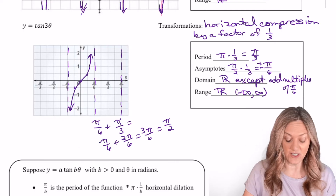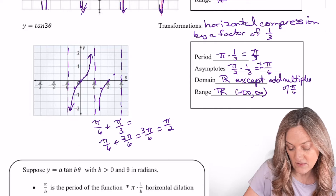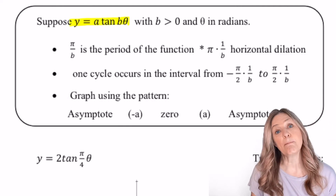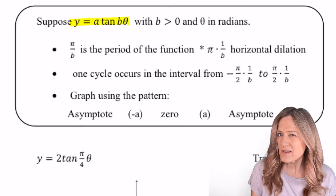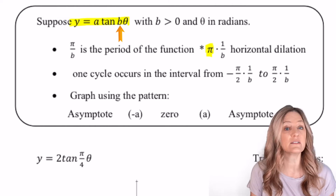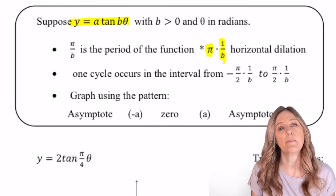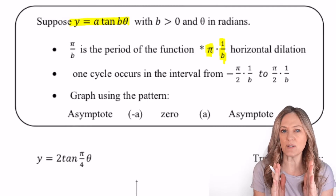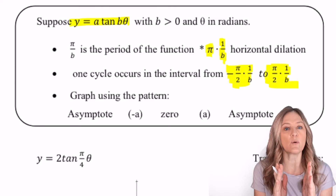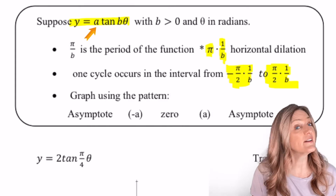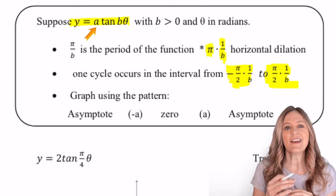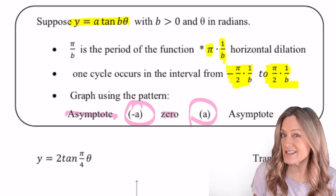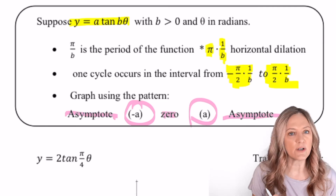Let's do one more sketch of tangent. Pattern points: zero-zero, negative one, positive one, concave down, concave up. Now let's pull together all of the transformations of tangent. For y equals a tangent b theta, the period is going to be pi over b — because the period of tangent is pi, and then b is that horizontal dilation factor. One cycle occurs between the negative pi halves and pi halves asymptotes if there is no horizontal dilation; if there is, multiply those asymptotes by the horizontal dilation. If we have a value a in front of tangent, that's a vertical stretch or compression, and it changes our pattern points to: asymptote, negative a, zero, positive a, asymptote.